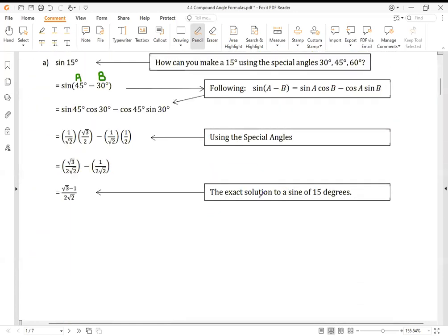Let's do it. 45, 30. Sine cos, cosine. Sine A, cos B. Cos A, sin B. And everything else then is special triangles. That's it.